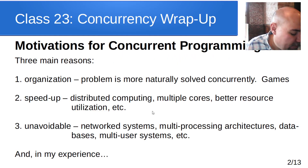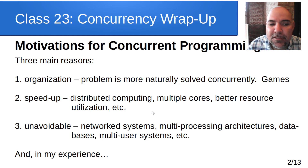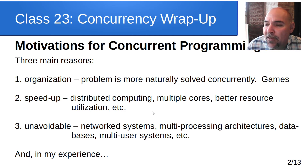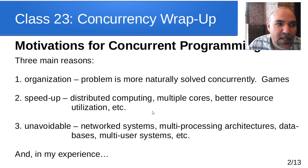As we saw previously, back in lecture one or two, we talked about motivations for concurrent programming. The three main reasons are: organization — the problem itself can be naturally solved with a concurrent solution. Games are a good example — you have different entities, maybe a thread for rendering, one for network communication in a multiplayer game, one for game logic, and one for AI entities.